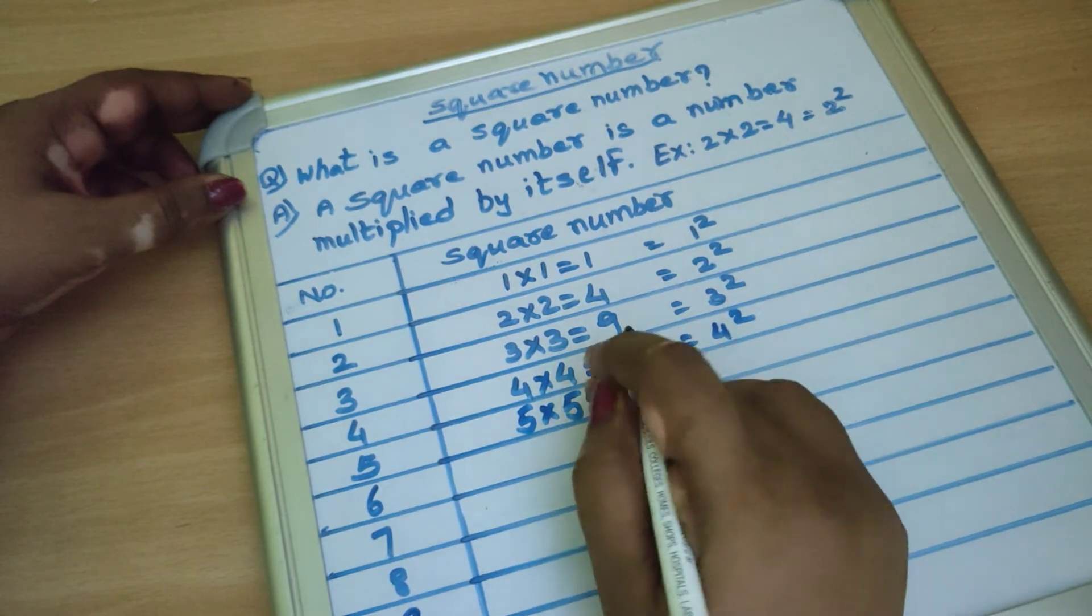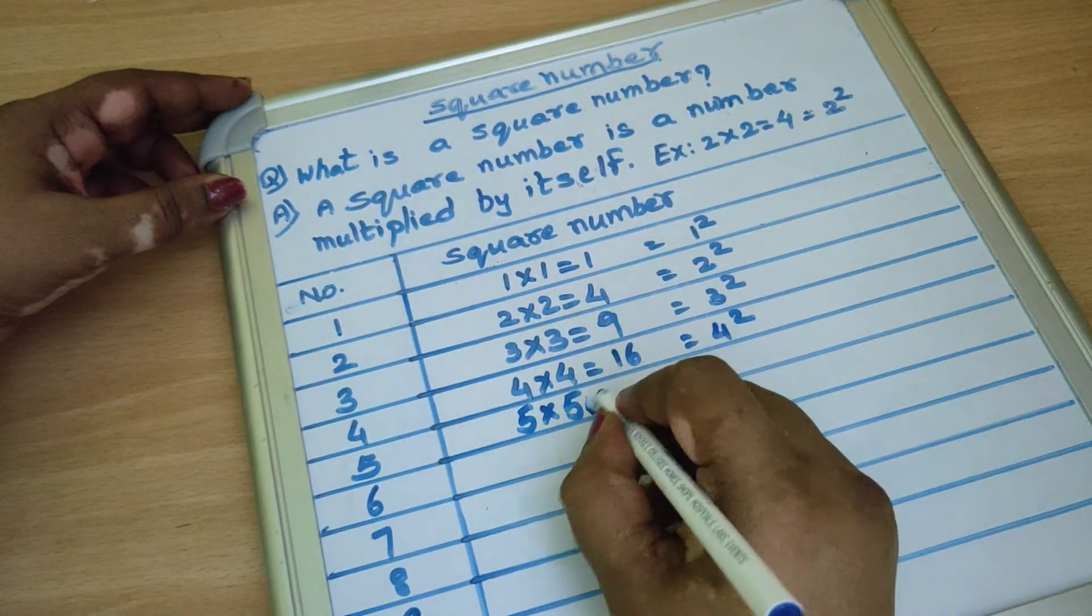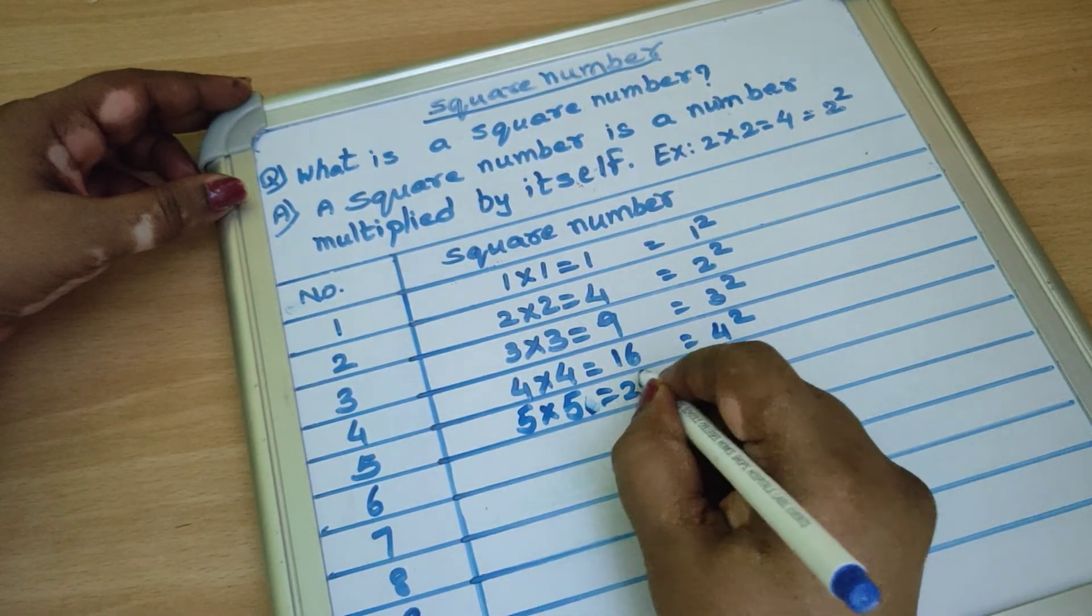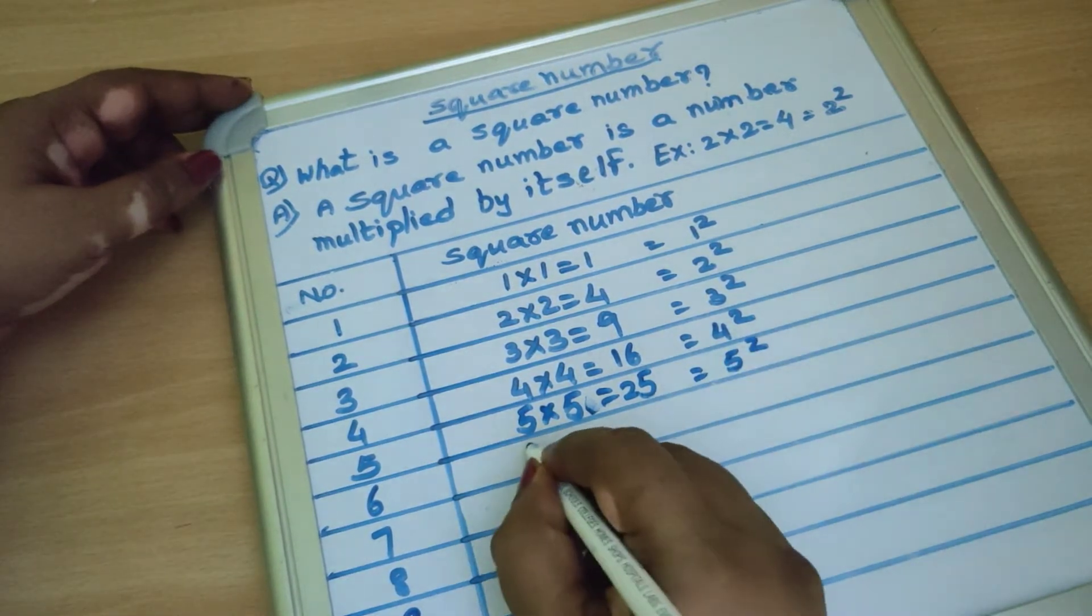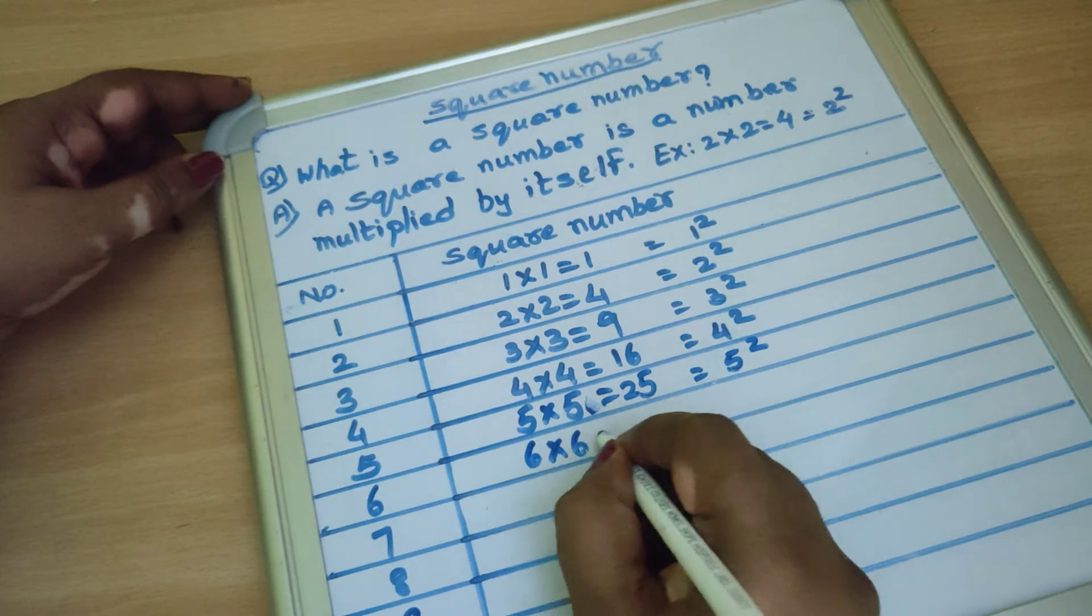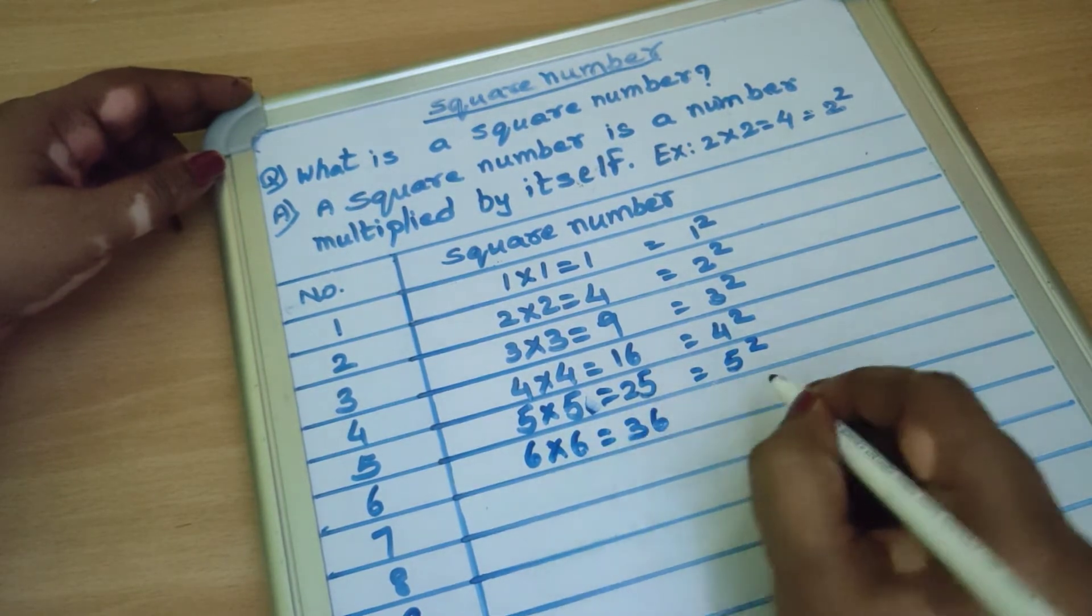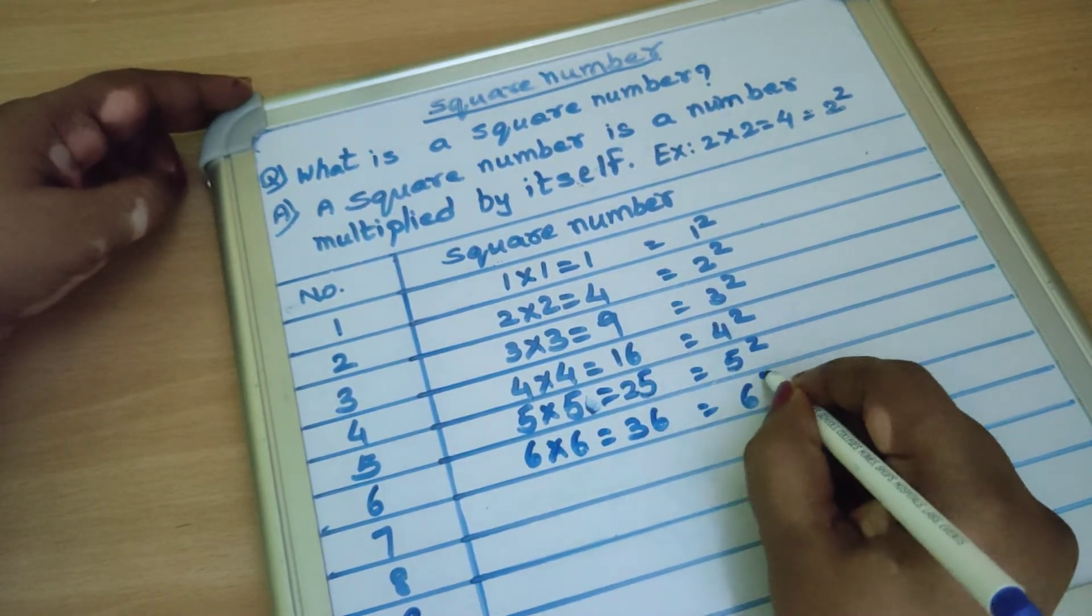5 into 5, 25. We write as 5 square. 6 into 6, 36. We write as 6 square.